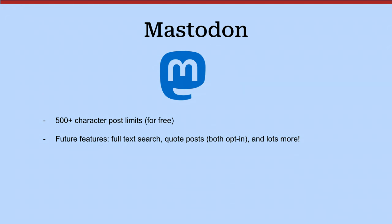If you post images, accessibility is a very big topic on Mastodon, so you want to make sure you include alt text for your images so that people with disabilities — screen readers and that sort of thing — can understand them. There used to be a lot more policing about that, but I would recommend it just as a general practice because you can't do that on Twitter.